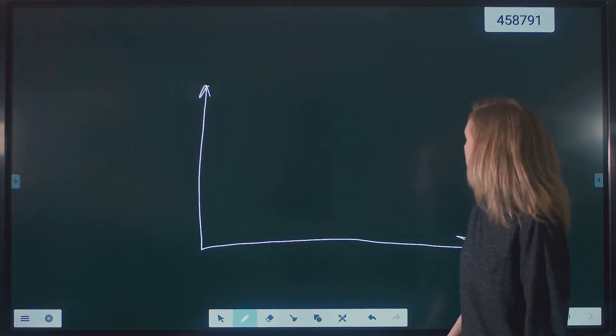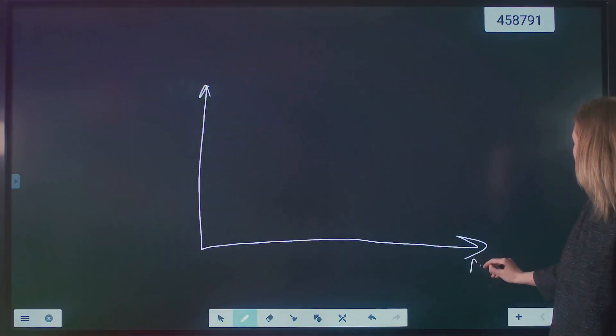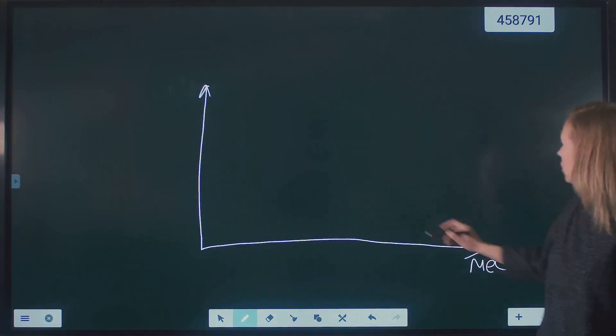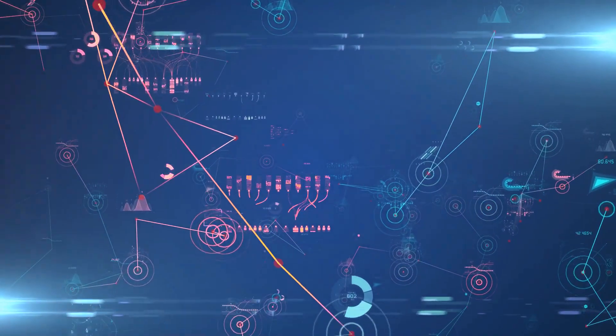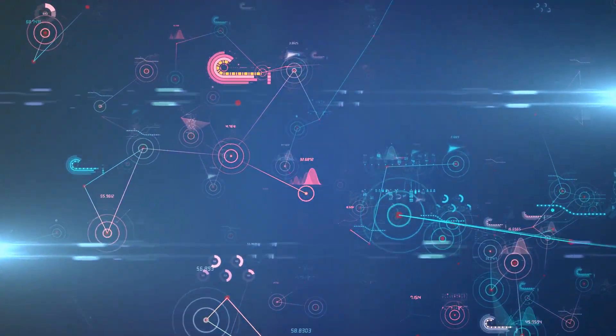LOESS is particularly useful when the relationship between the variables is non-linear or when there are outliers in the data. It can capture complex patterns in the data and provide a more accurate estimate of the underlying relationship.